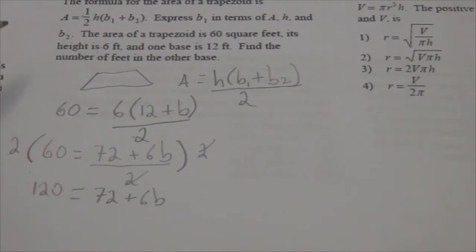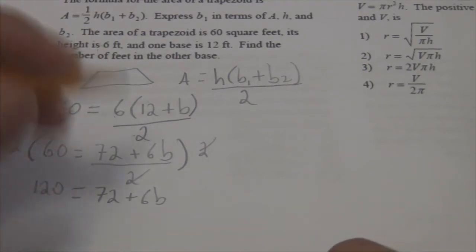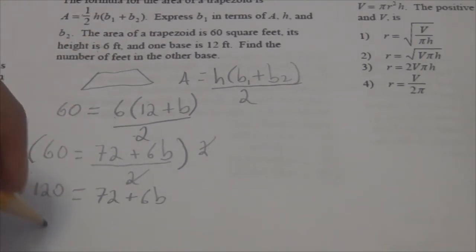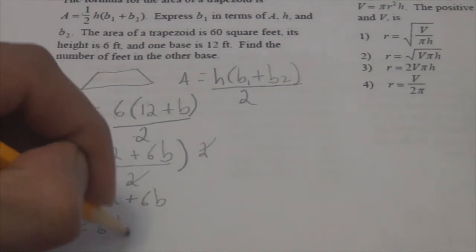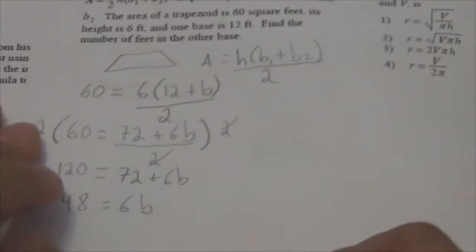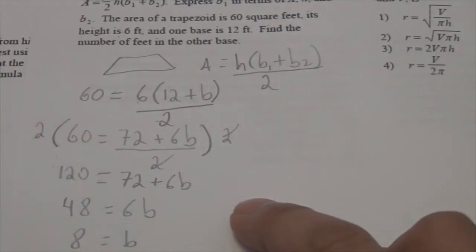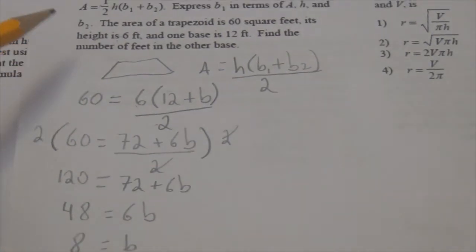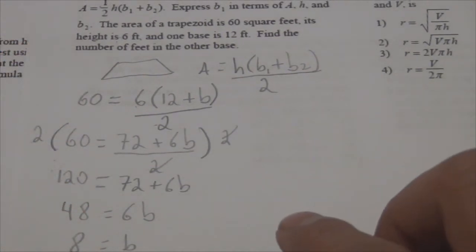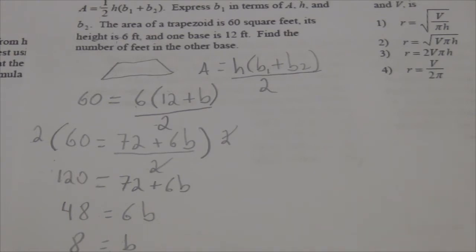I'm going to subtract 72 from both sides. 120 minus 72 is 48, and that equals 6B. Divide by 6 on both sides and I get B equals 8. The length of the other base is 8 feet.